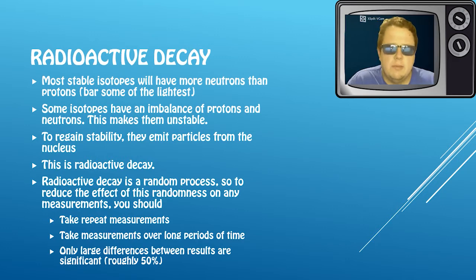So to reduce the effect of this randomness, like with any experiment which has a randomness to it, you need to first take repeat readings. We need to take measurements over a long time. So if we're doing radioactive decay measurements, we won't just take them for a second or two seconds or 10 seconds - we might take 100 seconds, you might take a minute, say. And when we're comparing different results, we're looking for a large difference - roughly rule of thumb 50% - but there'll be a significant difference and you'll be able to spot it in any questions that you do.